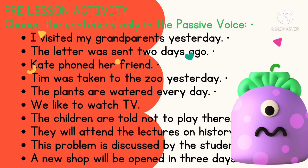Alright, let's check it out. The first sentence — 'I visited my grandparents' — is clearly active voice, because 'I' is the subject, 'visited' is the verb, and 'my grandparents' is the object. If you want to change it to passive voice, it will sound like: 'My grandparents were visited by me.'